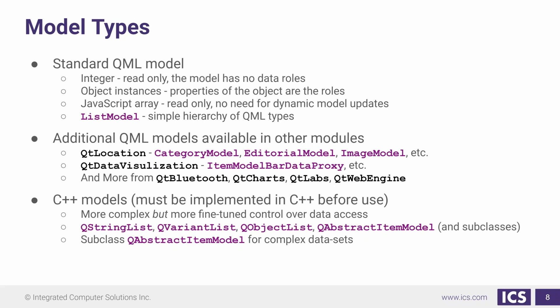In addition to that, there are other QML model types available in other QML modules. Location gives us several, we have data visualization, and there are others in Bluetooth, charts, and so forth. Usually when we do model-view, our production code will not use QML models — we will use C++ models.